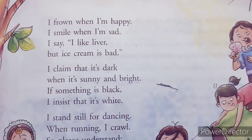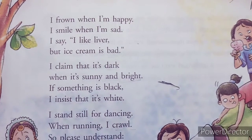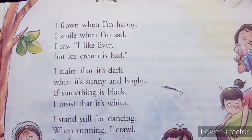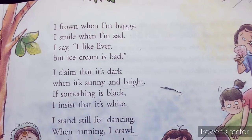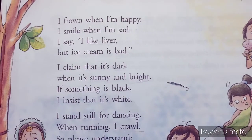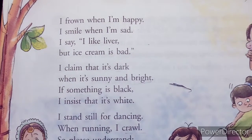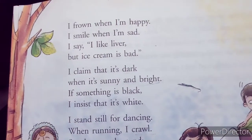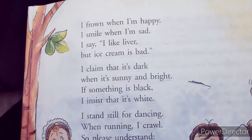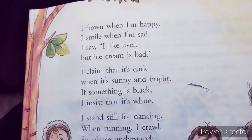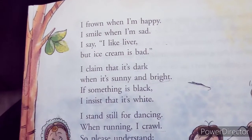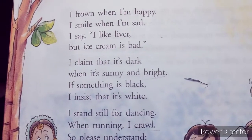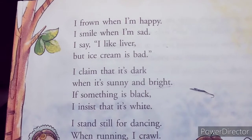I frown when I am happy, I smile when I am sad. I say I like liver but ice cream is bad. Frown means our facial expression when we disagree with something — jab hum kisi baat se disagree hote hain, us expression ko frown kehte hain. He said jab main khush hoga, I will frown. But whenever I am sad, I will smile. Liver means animal flesh — he says he likes it, but ice cream is bad. And we all know ice cream is a favorite of all kids.